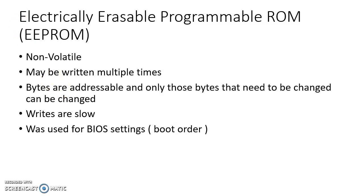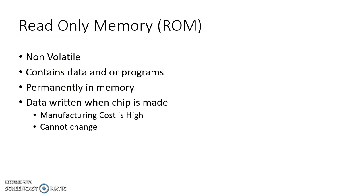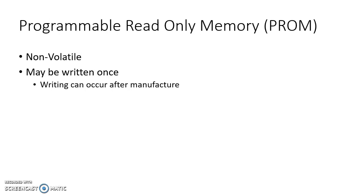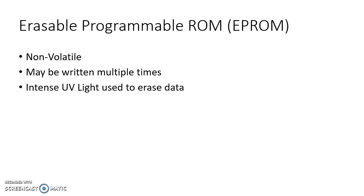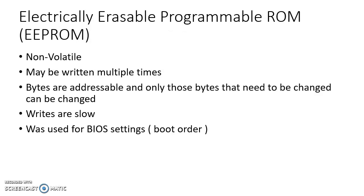Let's back up. All four chips we just looked at are read-only memory. Plain old ROM chips can only be written once, at the time of manufacture. Programmable read-only memory, PROM chips — the writing of data takes place after manufacture, but the write can only occur once. EPROM — erasable programmable read-only memory — can be written to multiple times, but you have to wipe out the entire chip to rewrite it, and that takes time. EEPROM allows changes only at the byte level, can be written multiple times, but the writes are slow.